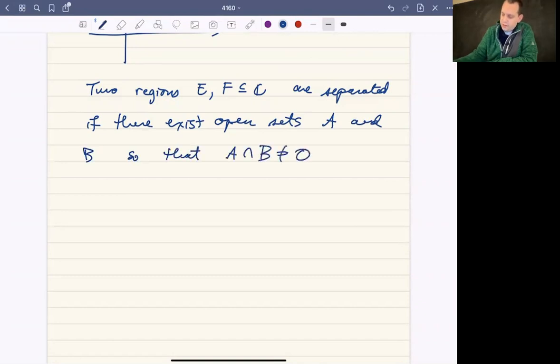Meaning that they don't overlap at all. So the intersection of A and B, that's the set of everything that A and B have in common. If that's the empty set, meaning that they have no points that overlap.